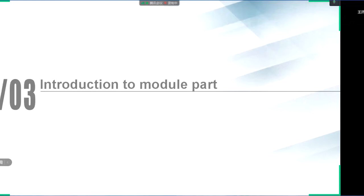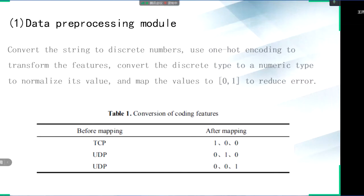I will now introduce the module part. The whole system can be divided into three modules. The first is the data preprocessing module. The first step is to preprocess the dataset, and then divide the input dataset into self-set and non-self-set. The specific method is to first standardize the collected data. Use one-hot encoding to transform the discrete data in the dataset in the data preprocessing part. Then use the principal component analysis algorithm to reduce the dimension of the features, reducing the complexity of the calculation and saving time. Convert the string to a discrete number, transform the features, convert the discrete type to a numeric type to normalize its value, and map the values to 0 to 1 to reduce error.